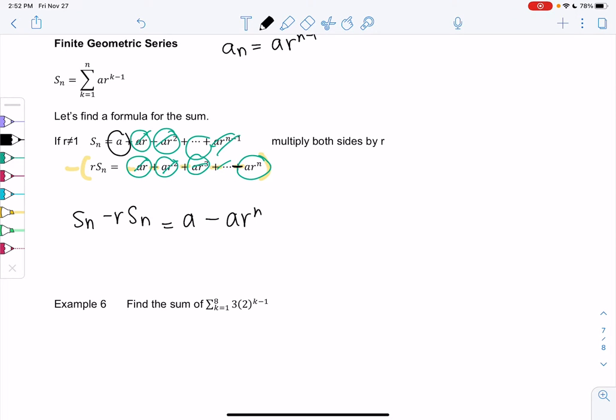We're just trying to find the sum, so we factor out S_n which is the sum. We get the sum times 1 minus r, and we can just divide by 1 minus r. Now we have a shortcut formula. You don't have to derive it ever again, but now you can trust me on where it came from.